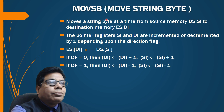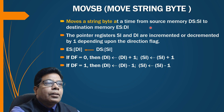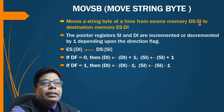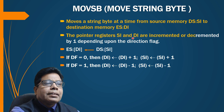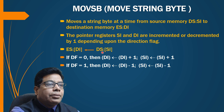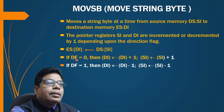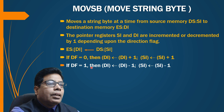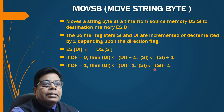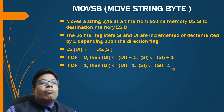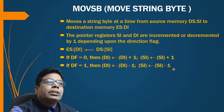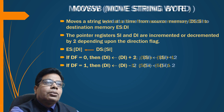The first string instruction is MOVSB — move string byte. This instruction moves a string byte at a time from source memory DS:SI to destination memory ES:DI. The pointer registers SI and DI are incremented or decremented by one depending on the direction flag. If DF=0, DI and SI are incremented by one; if DF=1, DI and SI are decremented by one.